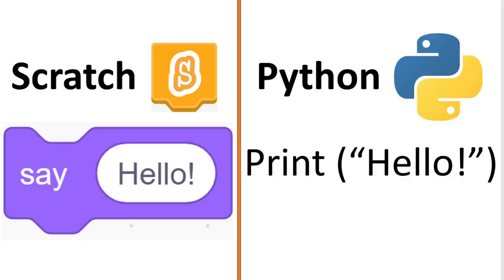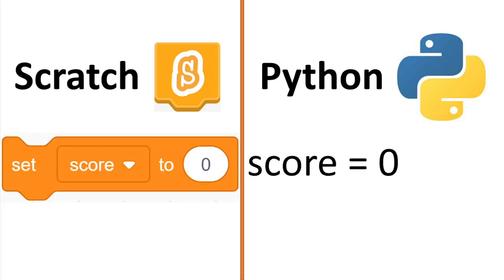We want to start with Scratch versus Python. In Scratch we have the 'say' block and it gets the sprite to say hello forever basically. In Python what we do is we just print something on the screen, because there aren't really sprites in Python unless you count PyGame, but that's different. If we're using normal Python, we just display something on the screen — to print 'hello' here's another example.